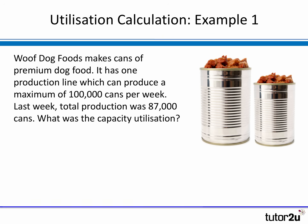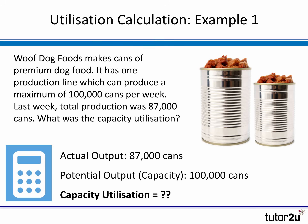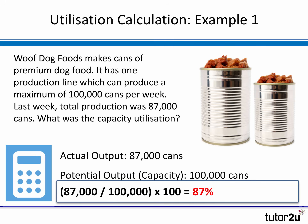We have all the information we need. The actual output is 87,000 cans and the potential capacity is 100,000. So we simply divide 87,000 by 100,000 and multiply by 100, which gives us 87%. In other words, Woof Dog Foods is operating below its potential capacity and has spare capacity. The difference between actual utilization and 100% is 13%. If it were making 100,000 cans each week, it would be at 100% capacity utilization, but it's working at 87% — 13% below that.